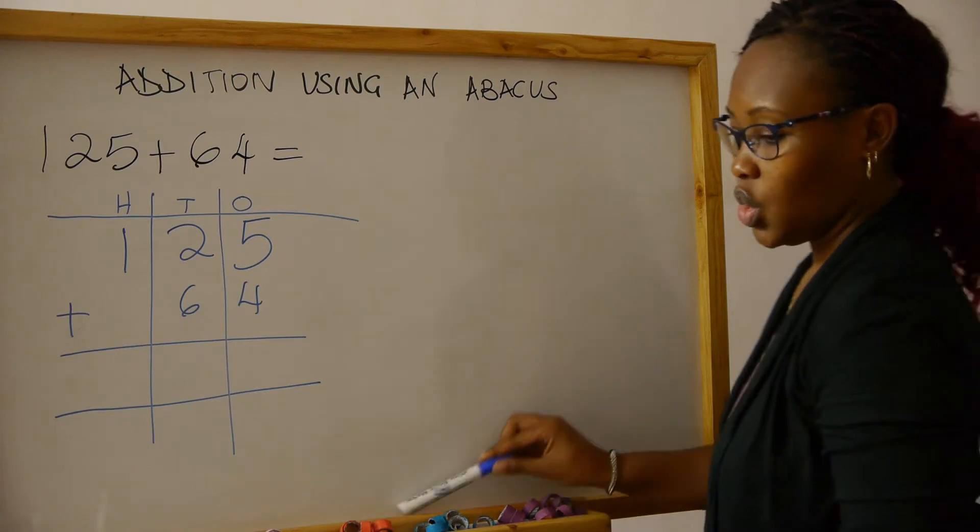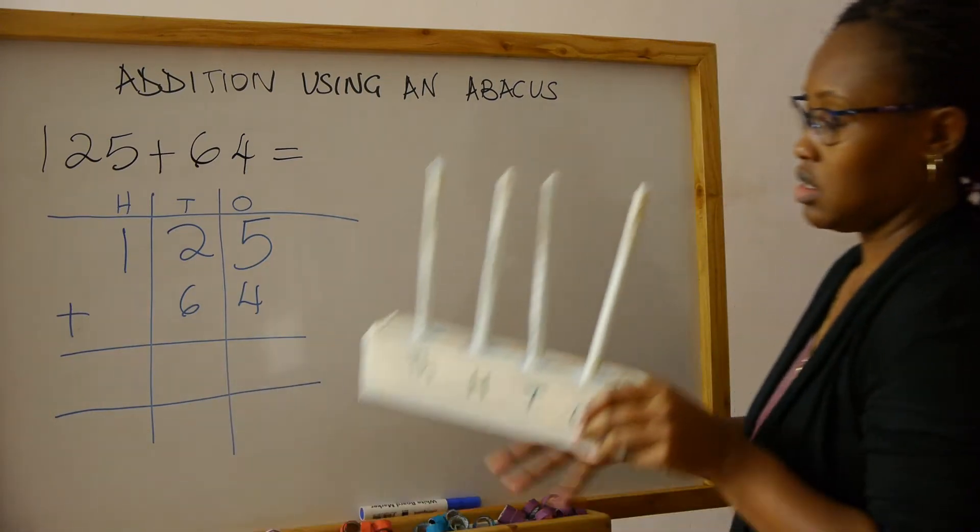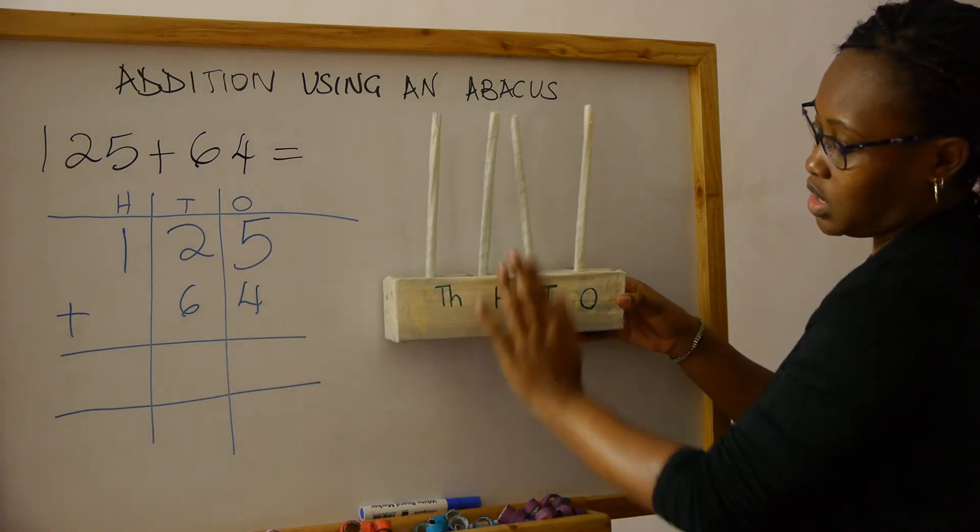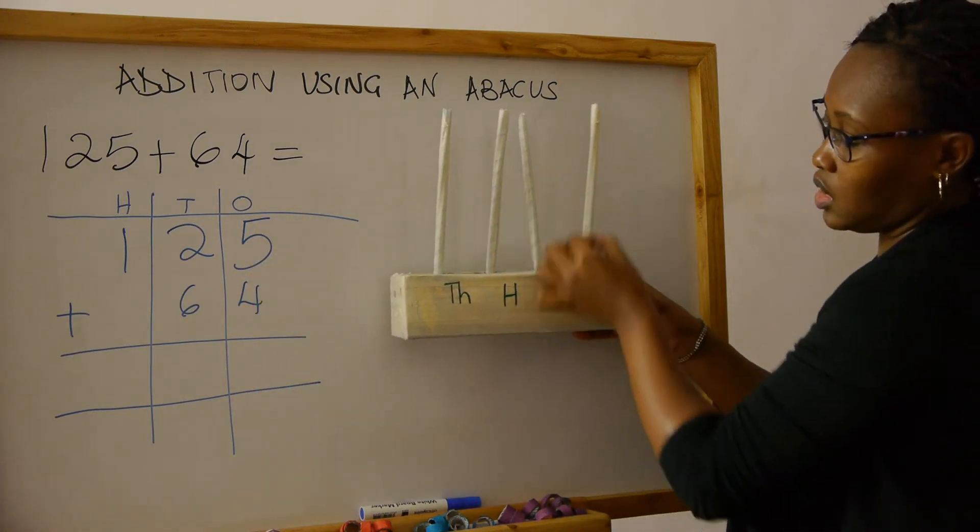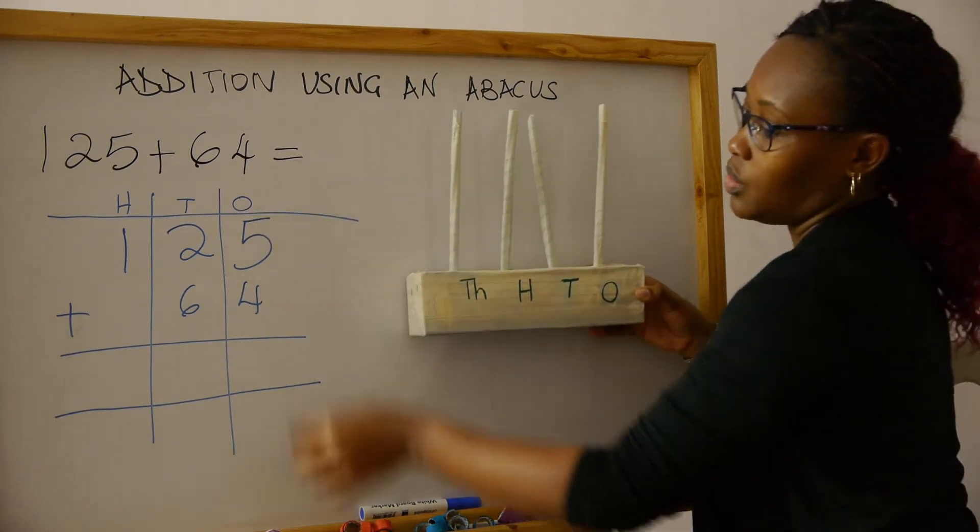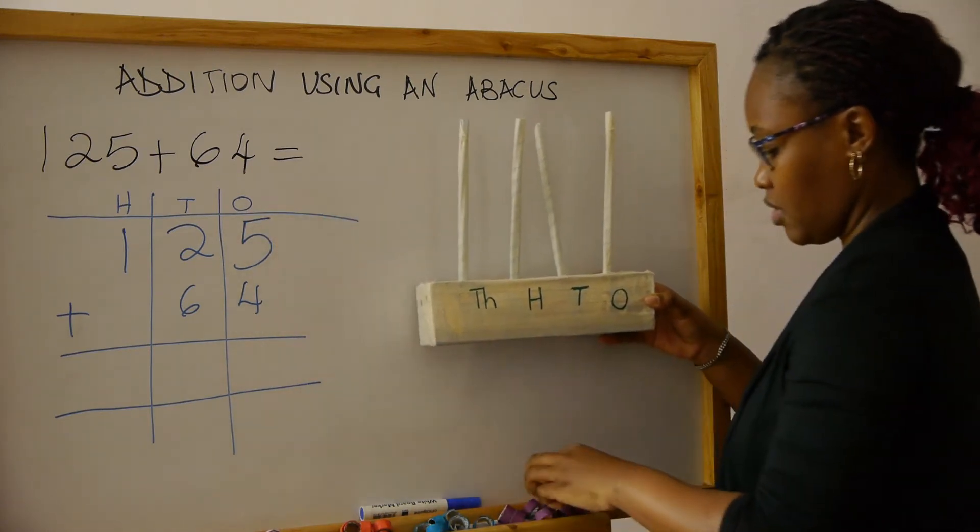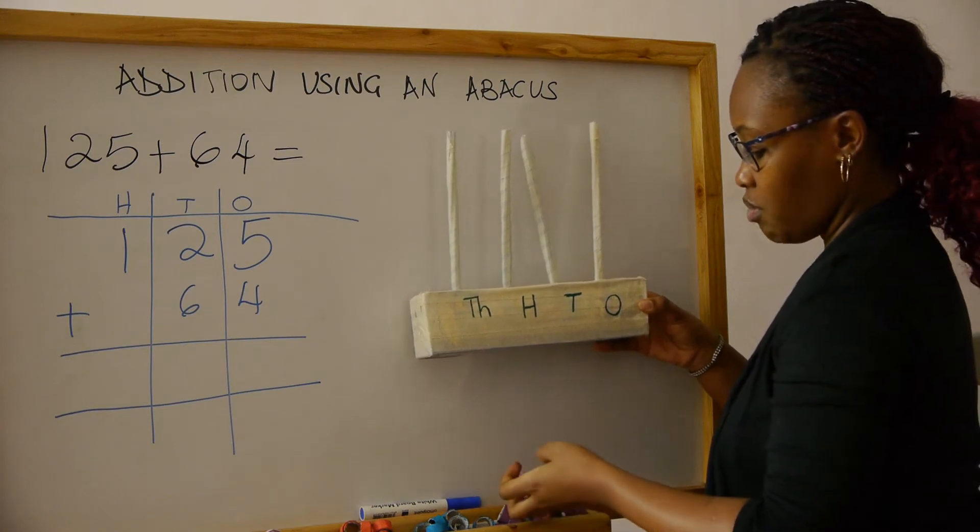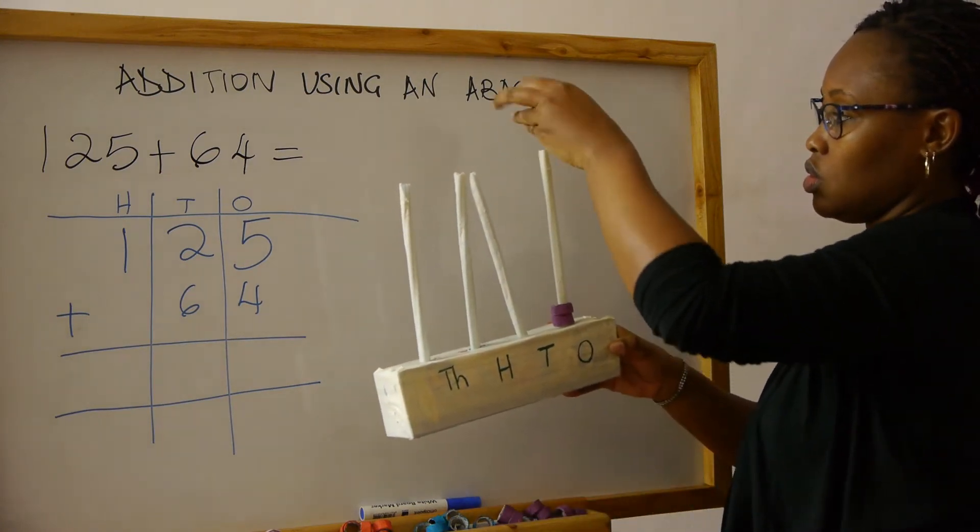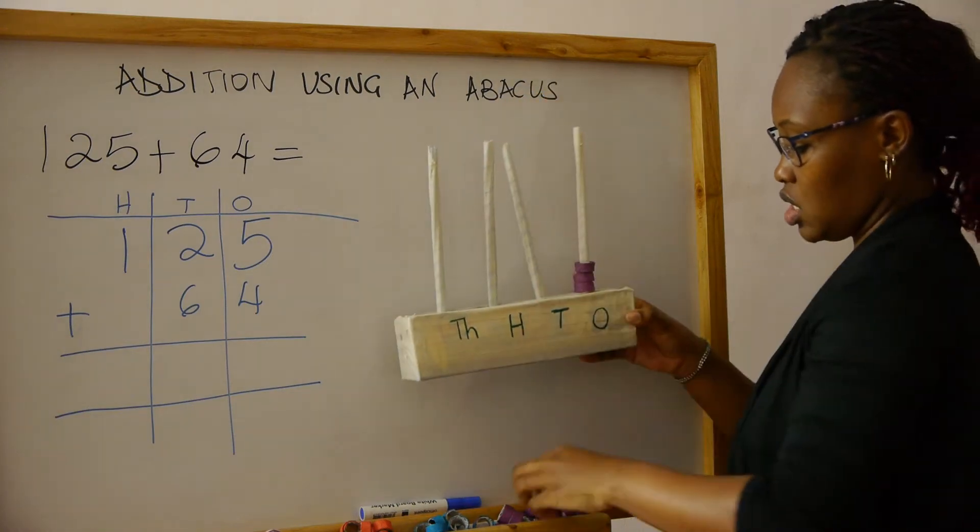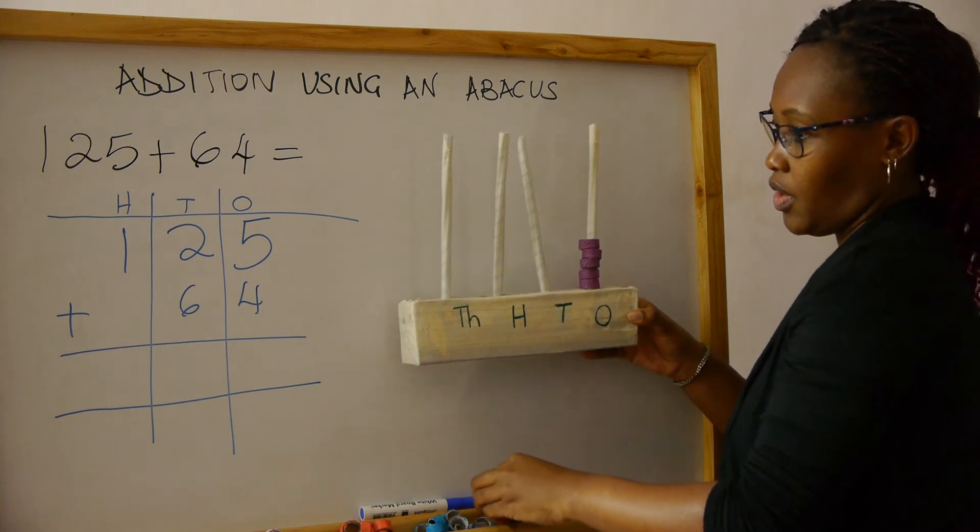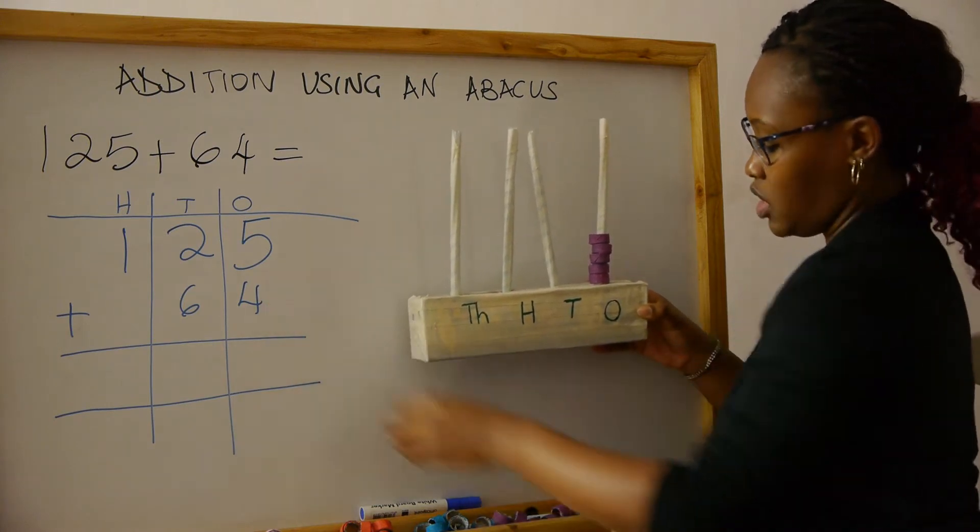So what we do is pick our abacus and put the beads in the different columns. We start with the ones column, which is this. We start with the five, so we put five beads, and then we put four beads.